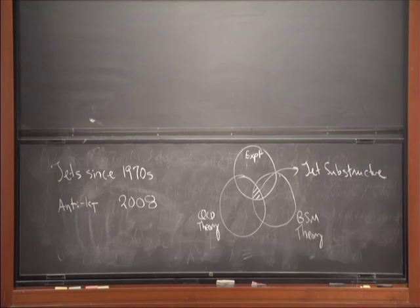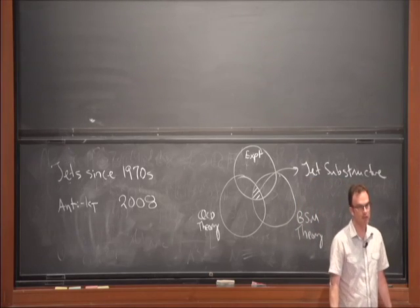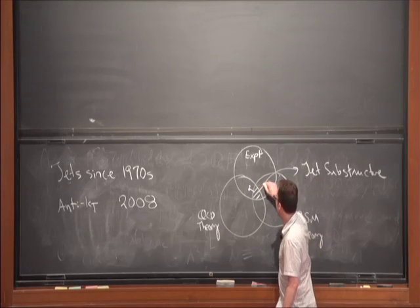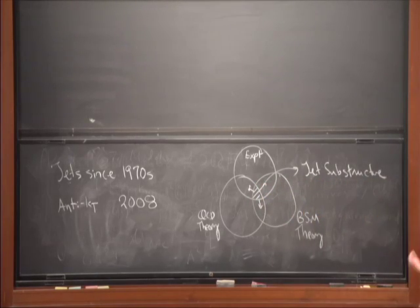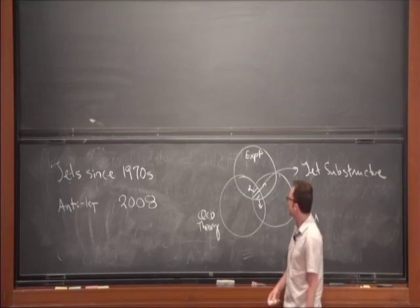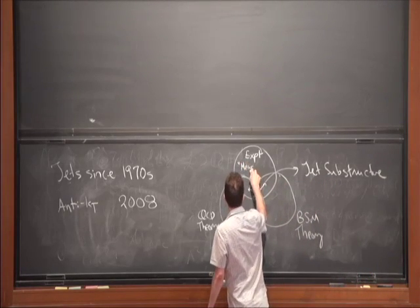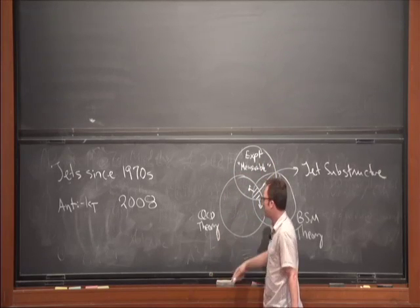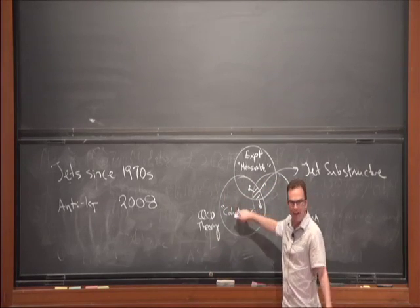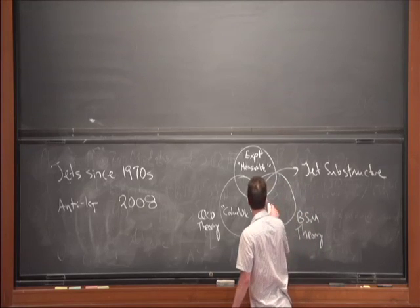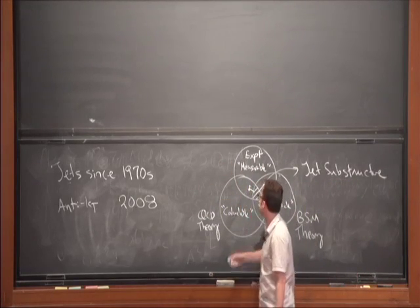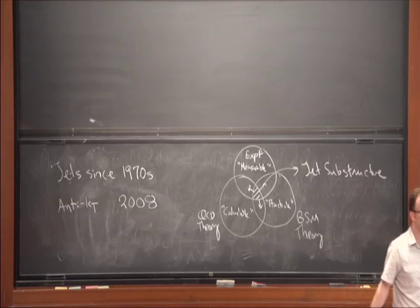All three communities meet at the center. Over the past five years there's been a series of Boost Workshops — there's one in Arizona this August. We're all trying to push the boundaries of what we understand about jets and jet substructure, increasing the range of things that fall under three categories: things that are measurable (experimental community), things that are calculable (QCD theory community), and things that are practical (BSM community).